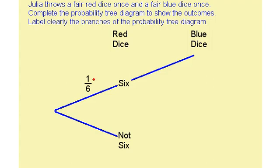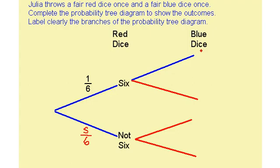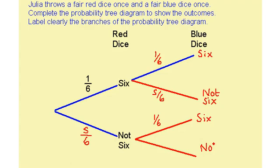The first thing we notice is that probabilities need to add up to one. So if the probability of getting a six is one sixth, the probability of not getting a six is five sixths. We then need to finish the branches: one branch is getting a six on the blue dice, and the other is not getting a six on the blue dice. The probability of getting a six is one sixth and not getting a six is five sixths — this applies to both sets of branches.